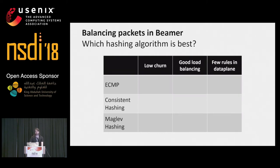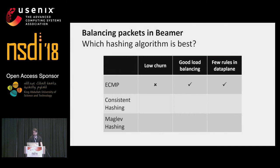When load balancing packets, we need some kind of hashing scheme. We're looking for three things: low churn — meaning when changes to the server pool occur, as little traffic as possible gets reallocated; even traffic spread across servers; and as few rules in the data plane as possible. ECMP typically does modulo hashing — it offers good load balancing and only requires one rule per server, but even small changes to the server pool may result in most traffic getting redirected. Consistent hashing offers low churn but may allocate huge portions of traffic to a few unlucky servers.